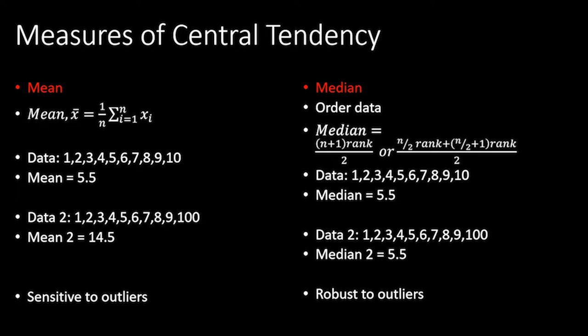Whenever someone collects data, one of the most important things to do is figure out if the data is real and represents what you think. To describe data we use measures of central tendency, which give the reader some idea of where the data points cluster. The most common measure is the mean, or average. The sample mean is denoted as x-bar; the population mean as the Greek letter mu. For the dataset 1 through 10, we add up the numbers to get 55 and divide by 10 to get 5.5.